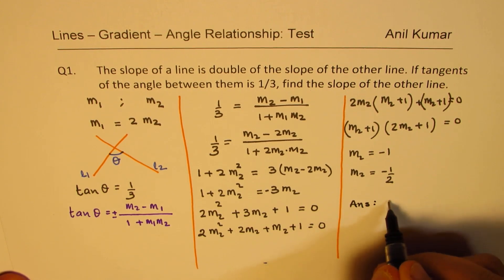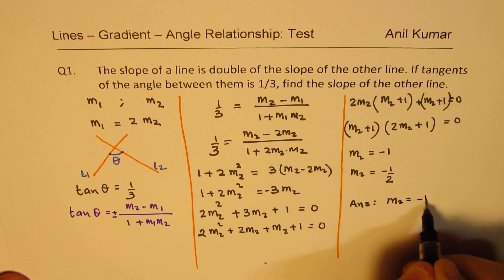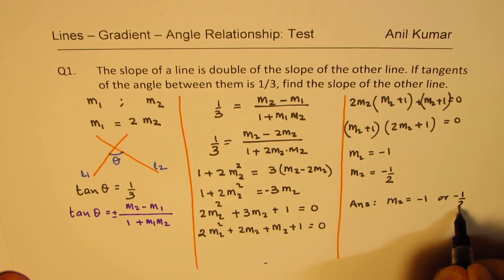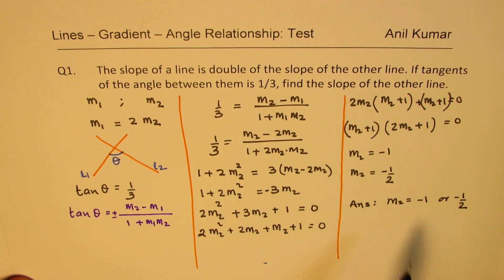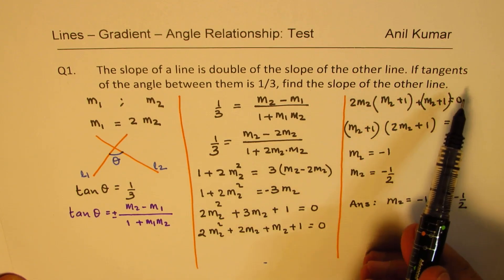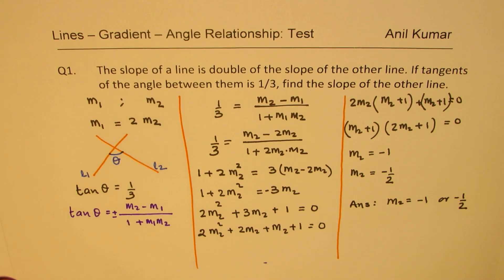So, the answer is m2 is equal to minus 1 or minus half. Is that clear to you? So, that is how we are going to find the slope of the other line. The slope of the other line was m2 for us. So, I hope that is straightforward.